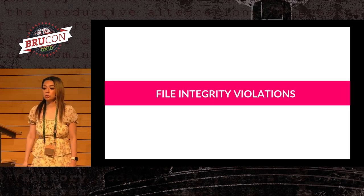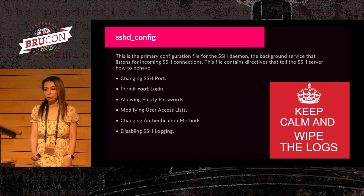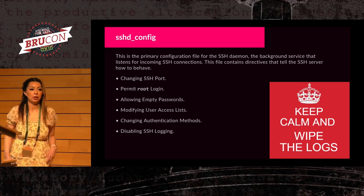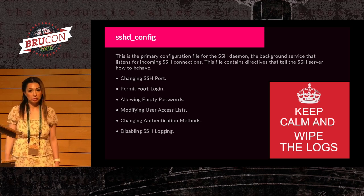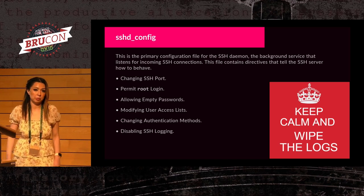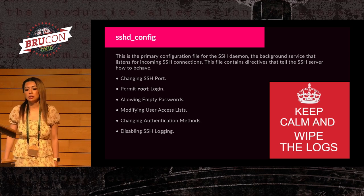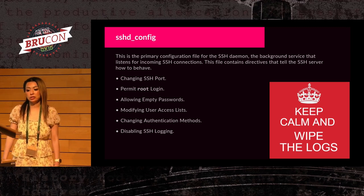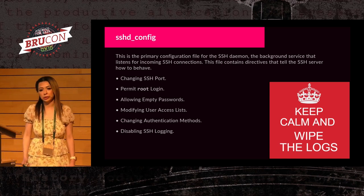Monitor file integrity and detect changes on sensitive files — for example, sshd_config or the shadow file. Anything that could potentially disclose information or break something. The sshd_config is the primary configuration file for SSH and contains directives that tell the SSH server how to behave. What kind of changes do we want to look at? Changing the SSH port (typically 22), allowing root login, allowing empty passwords (a big no-no regardless), modifying user access lists, or changing authentication methods — for example, disabling 2FA or disabling logging. If you see your logging is disabled, something really twisted could be going on.